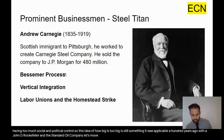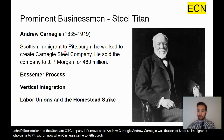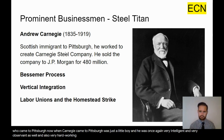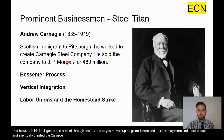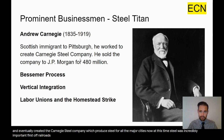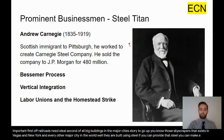Andrew Carnegie was the son of Scottish immigrants who came to Pittsburgh. When Carnegie was young, he was very intelligent, observant, and hardworking — really the prototype of a good American worker. He used his intelligence and hard work to move up through society, gaining more money and power, eventually creating the Carnegie Steel Company which produced steel for major cities. Steel was incredibly important — railroads need steel, and the skyscrapers in Vegas, New York, and every other major city are built using steel. If you can provide that steel, you can make a whole lot of money.